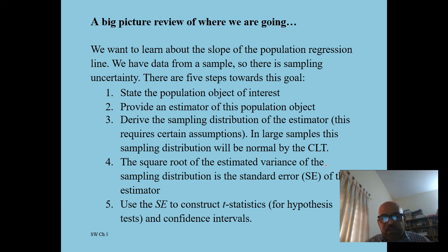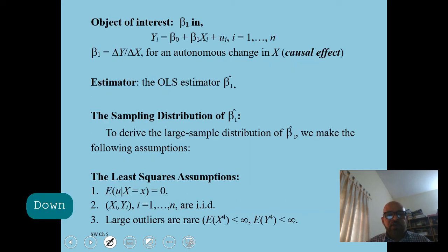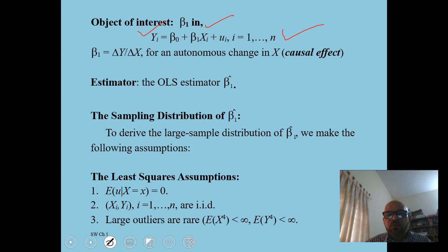From a sample we estimate population parameters. By the central limit theorem, when you have a large sample, the sampling distribution of the sum or means approaches a normal distribution, even if the error distribution is not normal. The square root of the estimated variance of the sampling distribution is the standard error. From the population regression model we get data on x (student-teacher ratio) and y (test score), and beta 1 is the slope coefficient — the change in y due to a change in x. We estimate it with beta 1 hat.